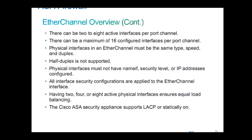When you bundle links together, make sure those links are of the same type — they all need to be access or they all need to be trunk. Make sure they all allow the same number of VLANs. Also, speed should be the same and duplex should be the same. In ASA, half duplex is not supported, so make sure all the links are full duplex and speed is the same. Don't mix gigabit Ethernet with fast Ethernet.